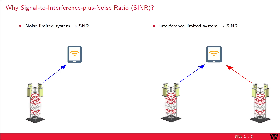If two base stations transmit at the same time on the same frequency, the receiver will receive both signals. The interfering signal could become dominant, so we would use the signal to interference plus noise ratio. This system is called interference limited. Note that the interference could also be so small that it does not even matter, and the signal to noise ratio is sufficient.